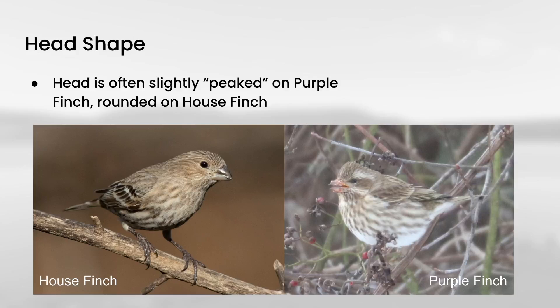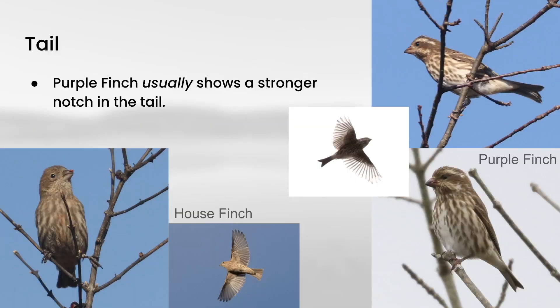There are also often differences in the head shape with more of a peaked appearance on purple finch usually and more of a rounded appearance on house finch, but that can be a little bit variable. And since the head shape and also the bill shape are more of structural clues, we can use those to help us on the male plumages as well. The tail can be helpful on males and females too — generally purple finch shows a bit more of a notch in the tail than house finch does, and you can see that both perched and in flight.